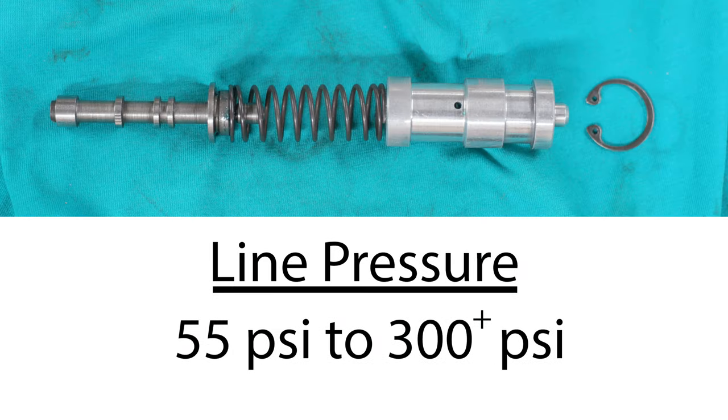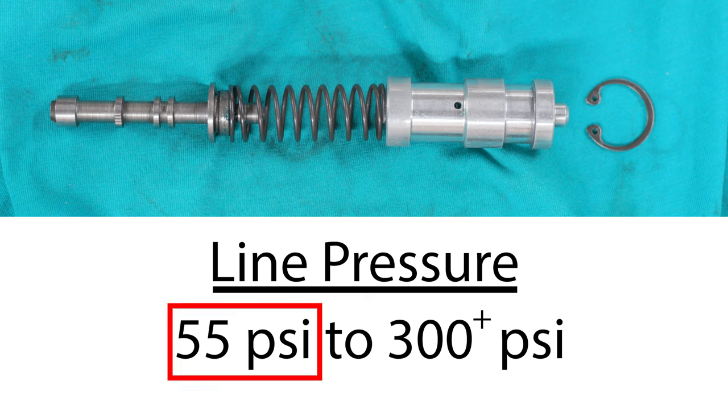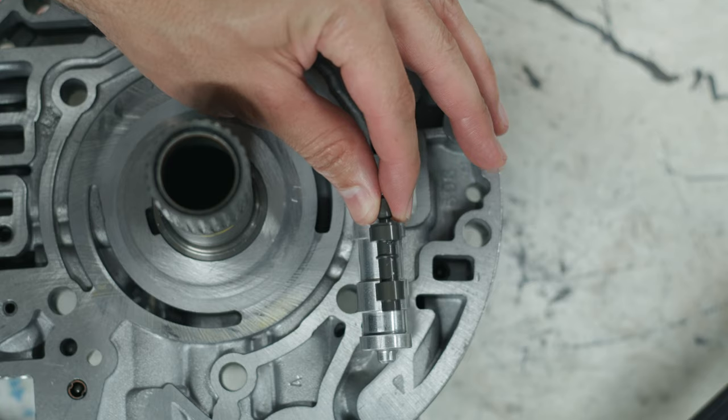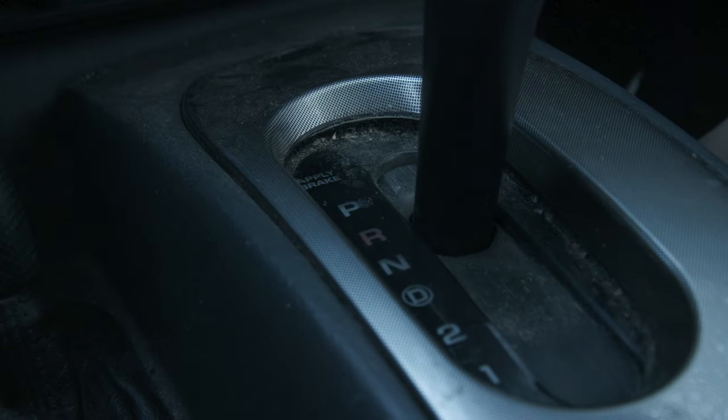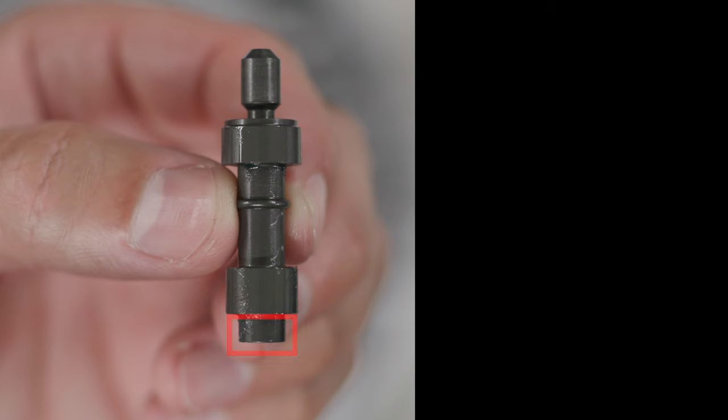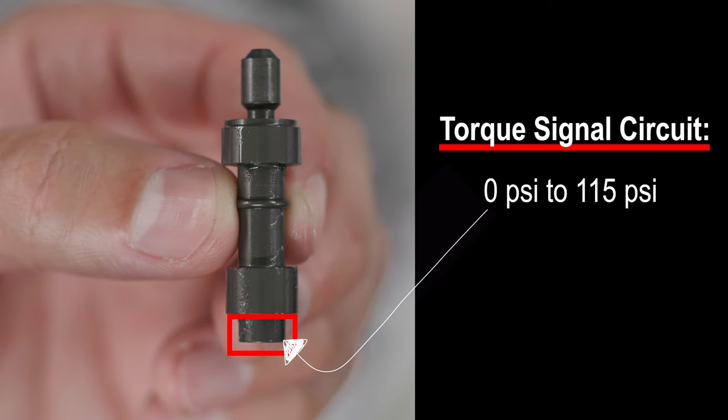We've learned how the PR valve is able to establish a base line pressure of roughly 55 psi. We've learned how the PR valve is able to elevate line pressures with the transmission in both drive and reverse. One of the ways that the PR valve can increase line pressure is with the use of the oil coming from the torque signal circuit. If you're a bit confused by this recap, you can easily get up to speed by checking out the entire video series. Links to those videos can be found in the video description down below.